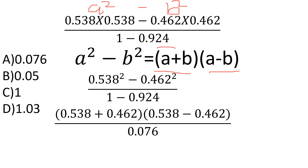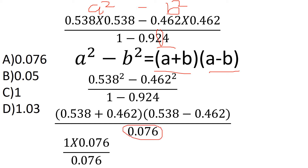Ok, add these values. 0.538 plus 0.462 equals 1. 0.538 minus 0.462 equals 0.076. So the answer is 1 times 0.076, which equals 0.076.